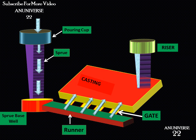The next part is the riser. Most foundry alloys shrink during solidification. As a result of this volumetric shrinkage, voids are likely to form in the casting. These voids need additional molten metal, so a reservoir of molten metal must be maintained from which metal can flow into the casting when the need arises. These reservoirs are called risers.